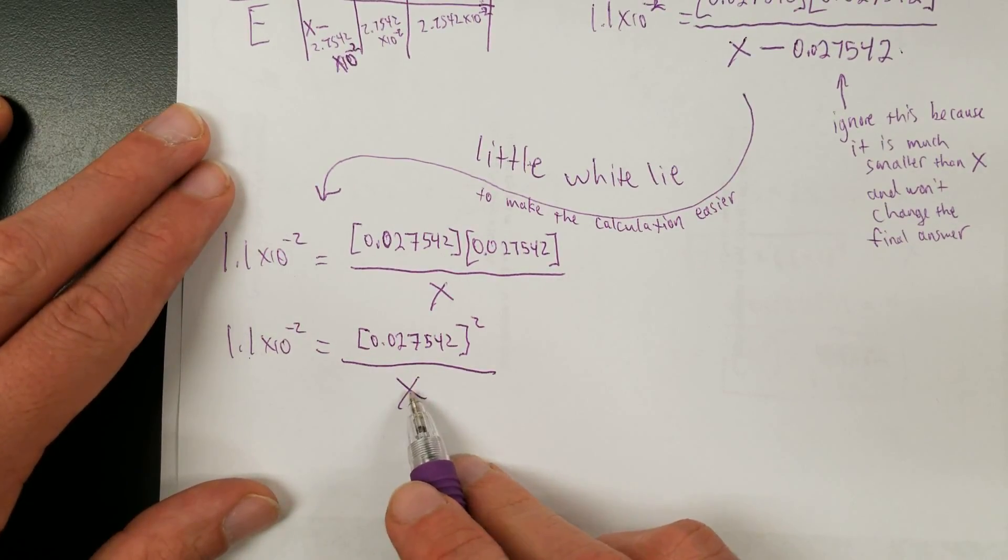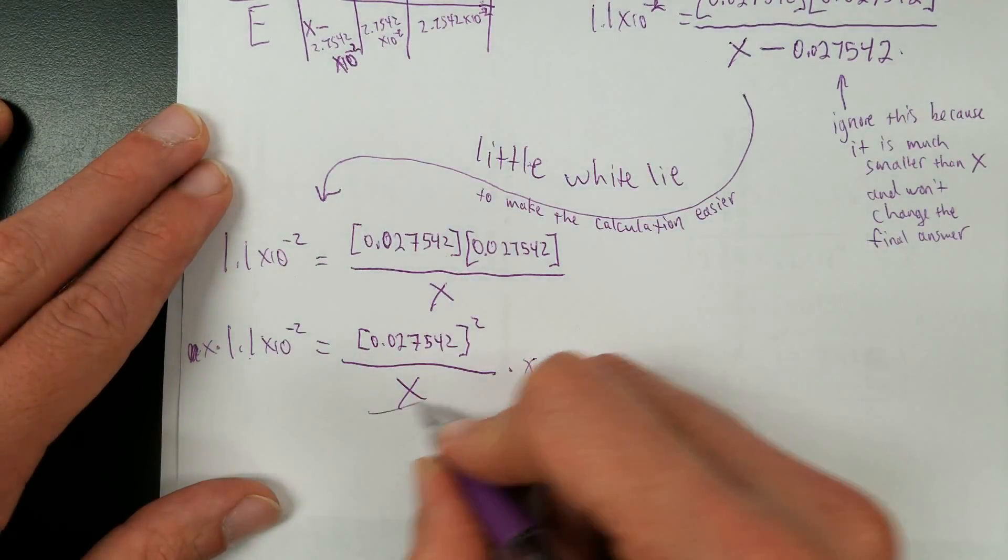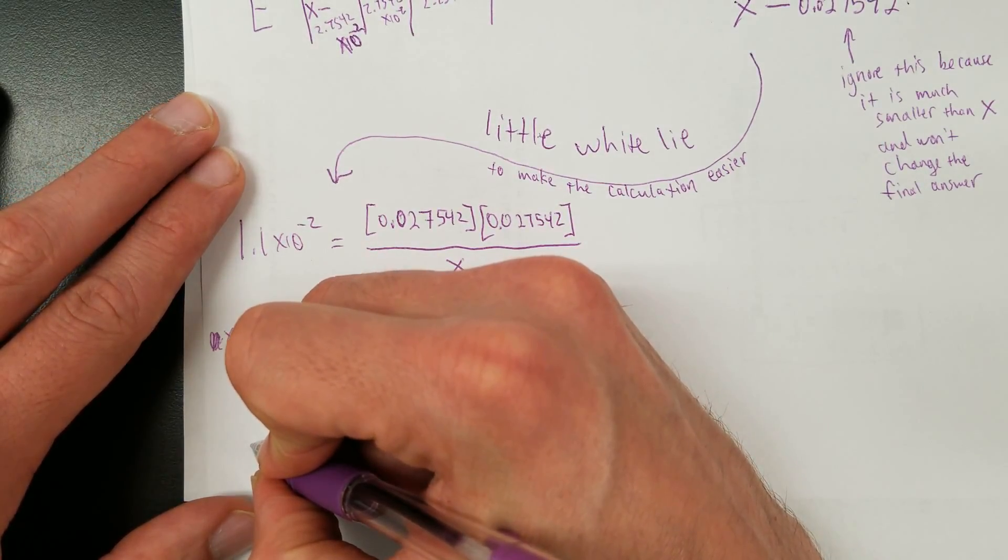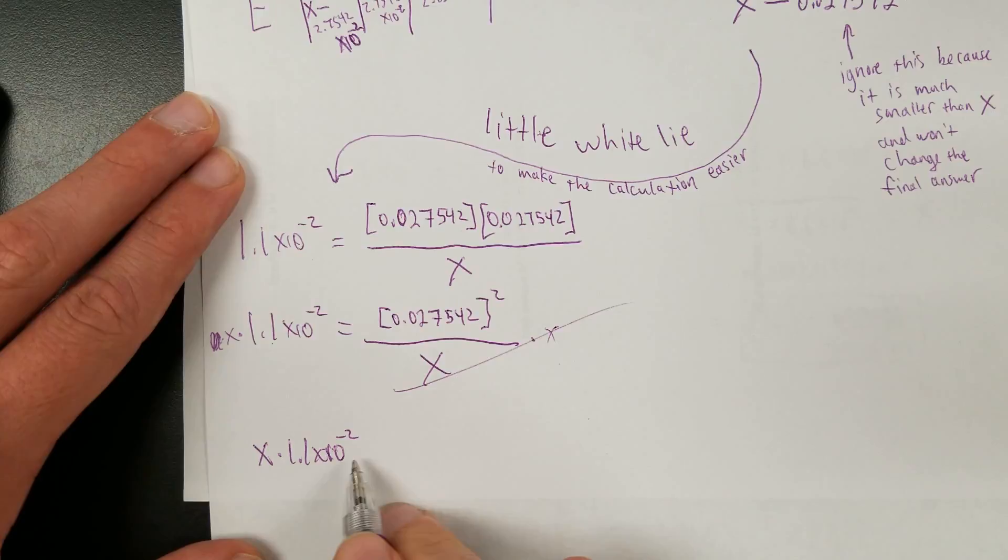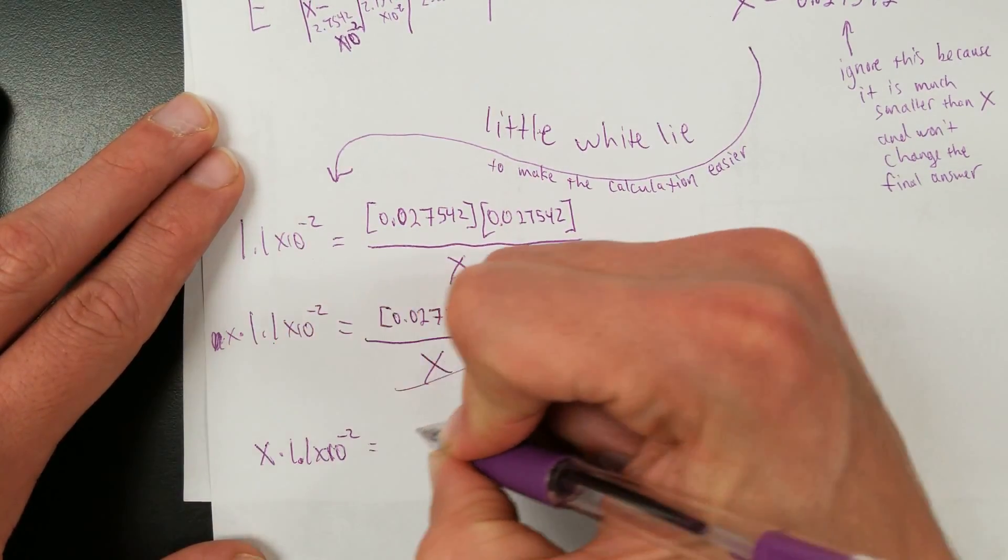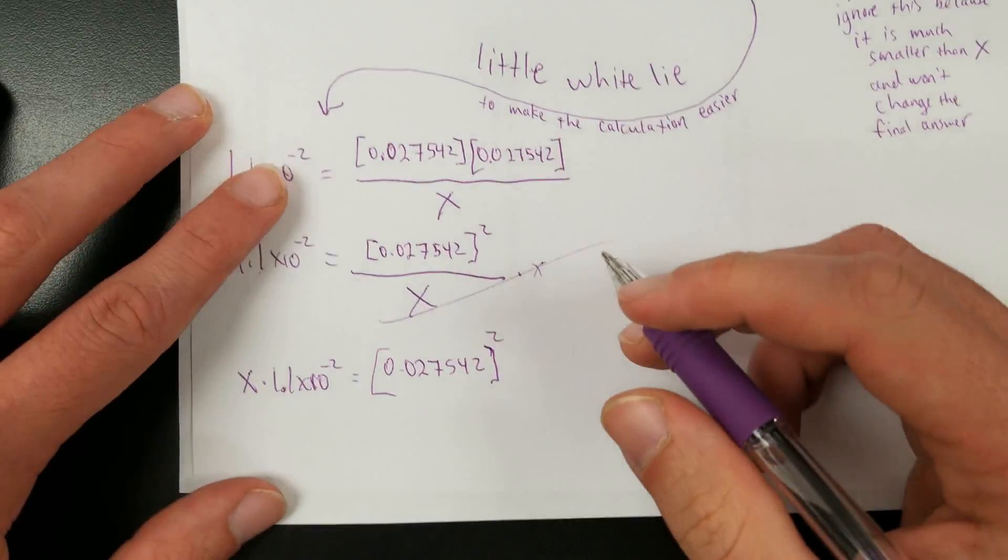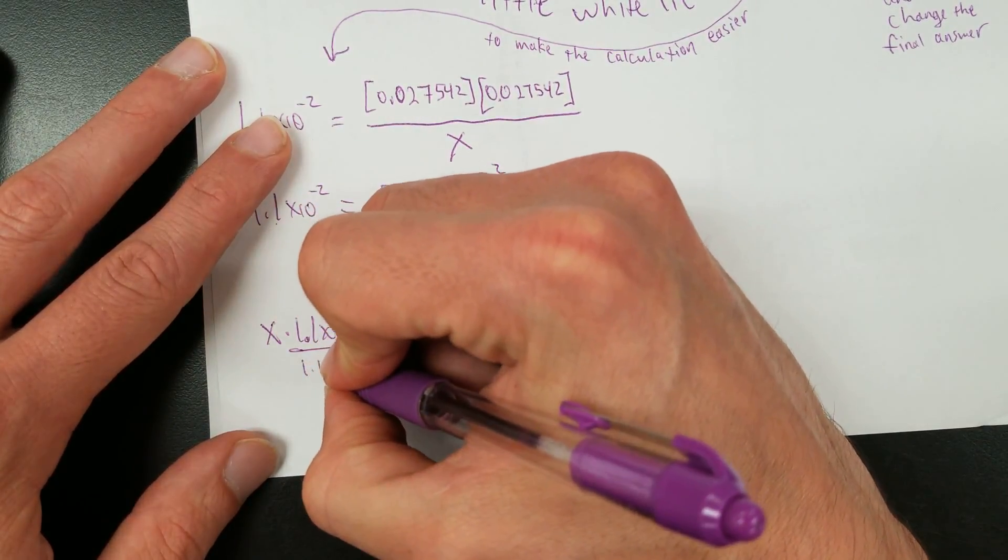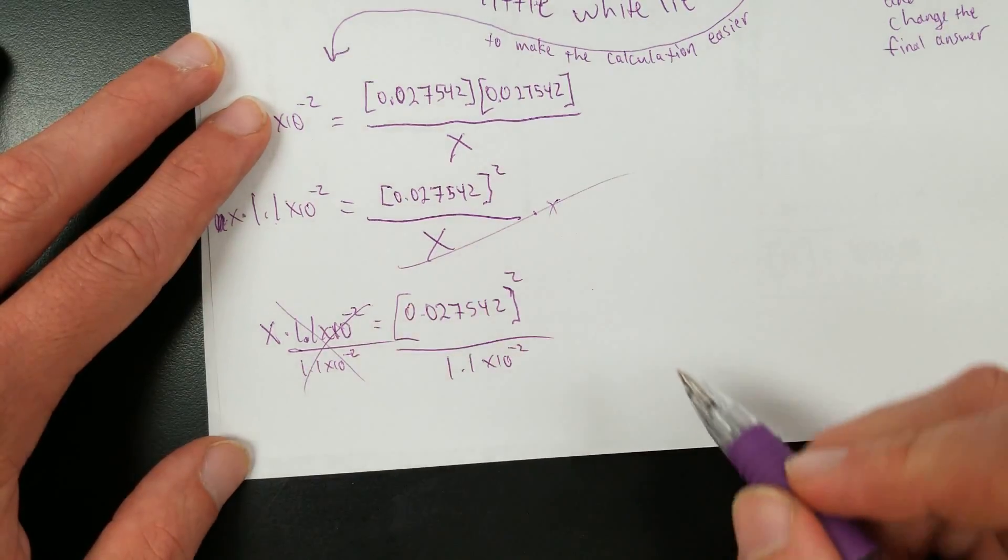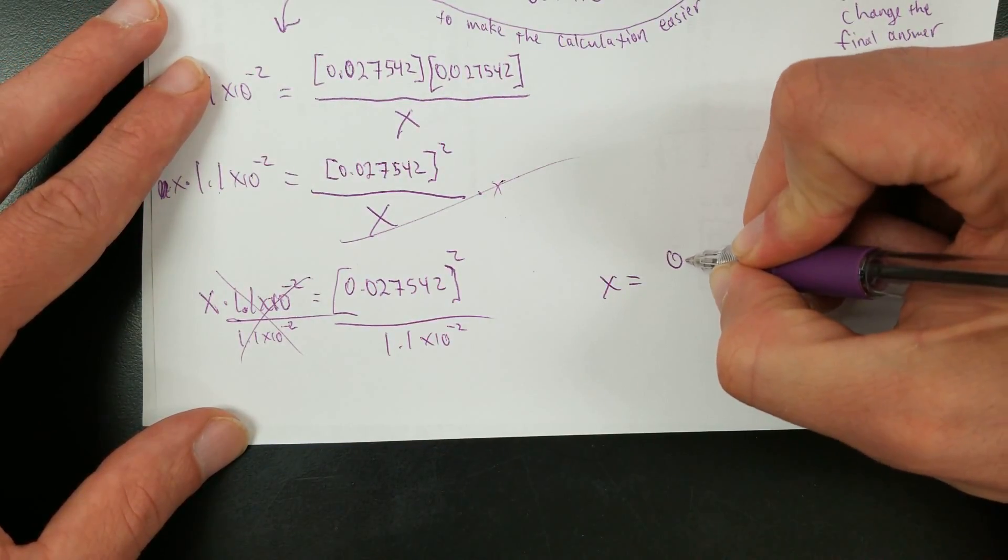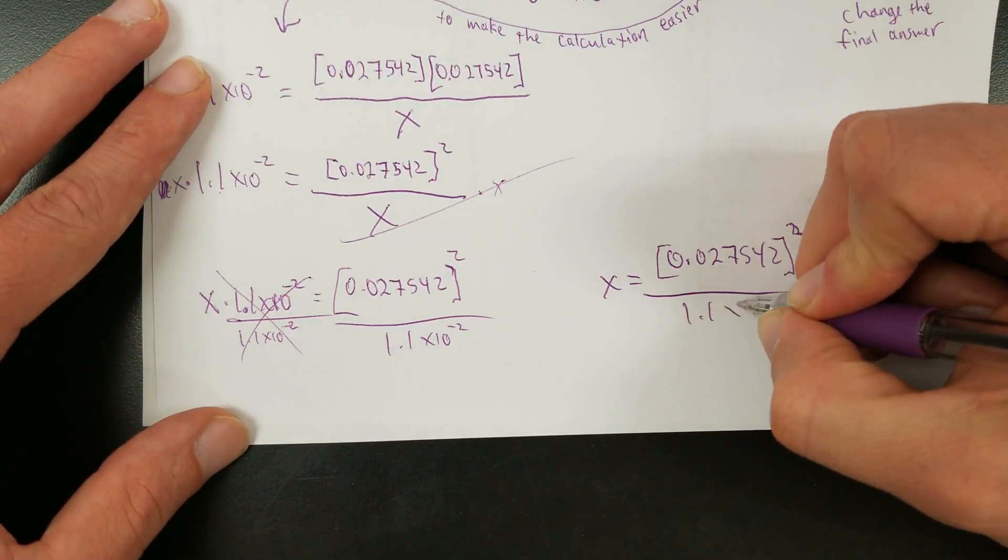All right. What do we do now? We need to solve for X. So times both sides by X, so times X, times X. Please cancel. All right. Now we have X times 1.1 times 10 to negative second. Maybe X wasn't the best choice of variable because now, whatever. Equals 0.027542 squared. And then let's divide both sides by this. Divided by 1.1 times 10 to the negative second. Divided by 1.1 times 10 to the negative second. That way these cancel, leaving just X on that side. So X equals 0.027542 squared over 1.1 times 10 to the negative second.